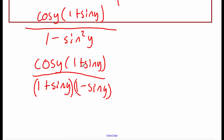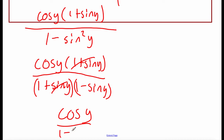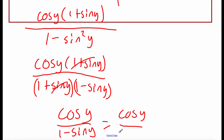We've got 1 plus sine of y on both top and bottom, so those cancel out. We're left with cosine of y over 1 minus sine of y, and that matches exactly what we were trying to show — so we're all done with that one.